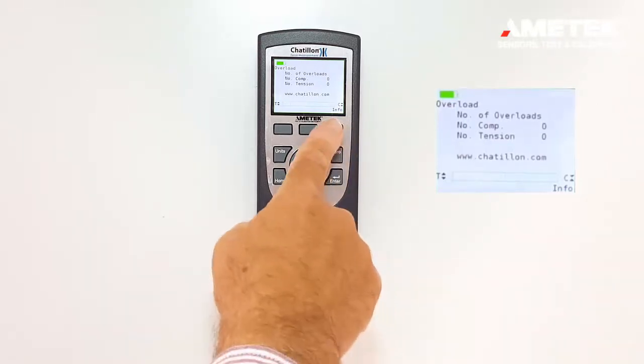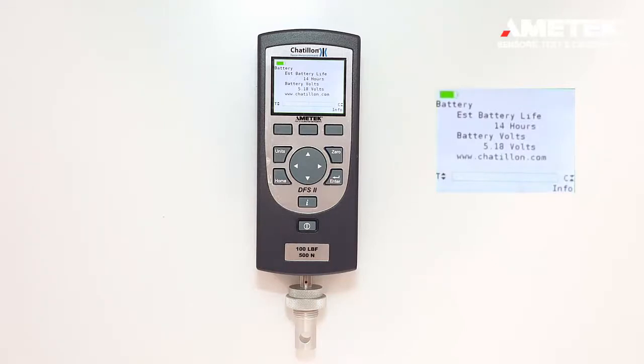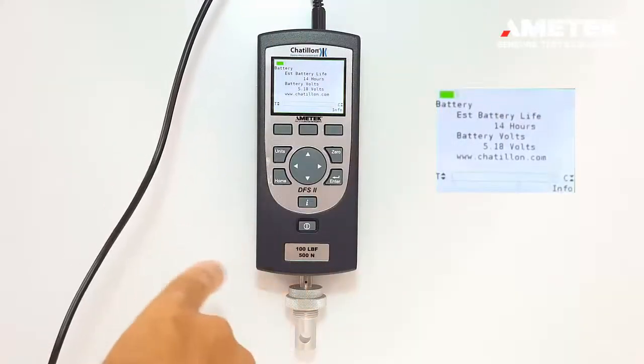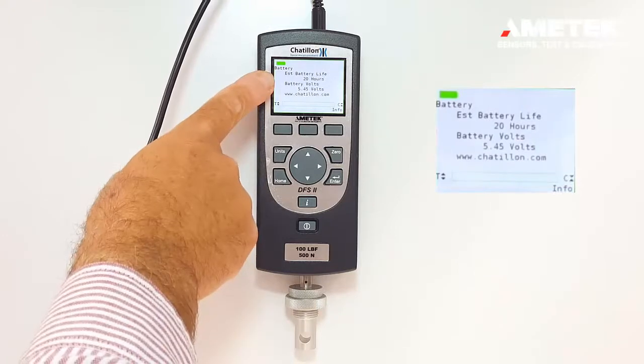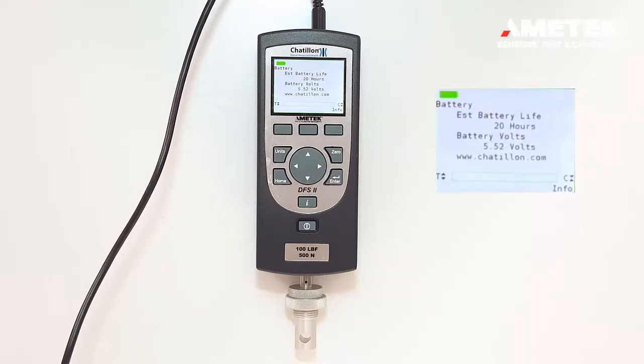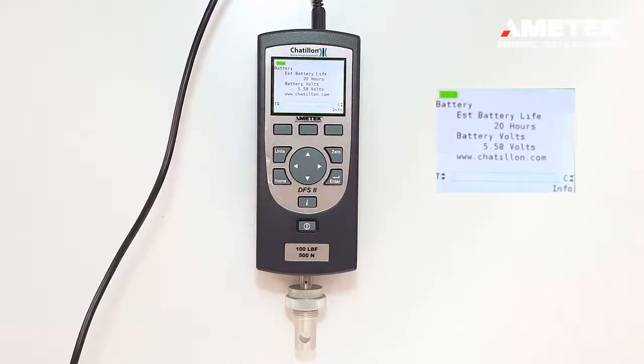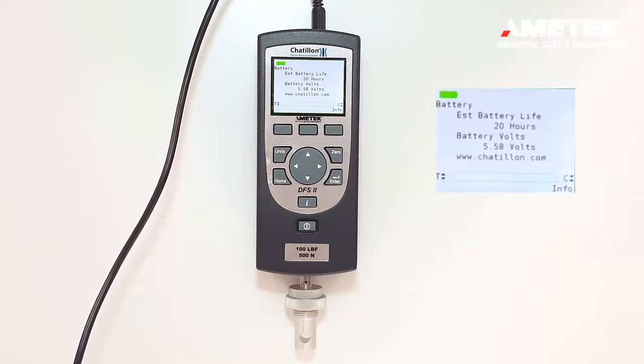Now if the information button is pressed again, we have information regarding the battery life of the gauge, and this is a good way of checking the battery charge and the battery itself. We have the estimated hours that went from 14 hours to 20 hours, and we also have the battery level that is going up showing it's charging. So that's another good way of verifying your charging circuit.